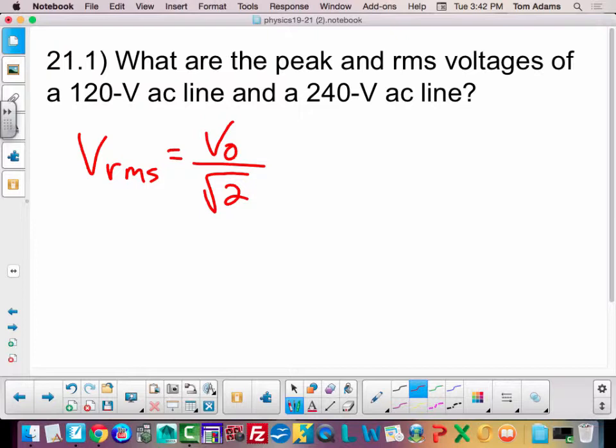So basically what we're looking for is this. So what I would do is I would say V0 is equal to, if I multiply both sides by the square root of 2, V_RMS.